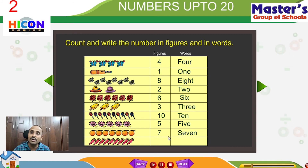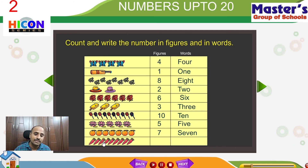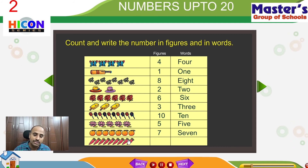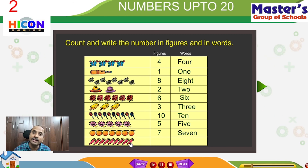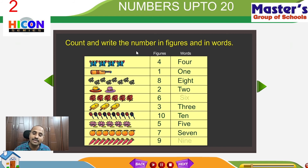See the last set of pictures. What are those? Those are called carrots. How can we represent these carrots in figures? Let us count: 1, 2, 3, 4, 5, 6, 7, 8, 9. How many carrots are there? A total of 9. We can write the number 9, and in words: N, I, N, E — nine.